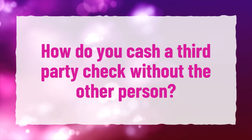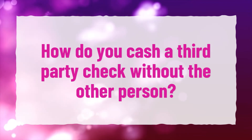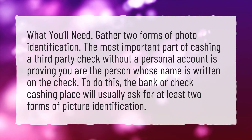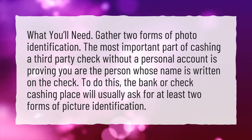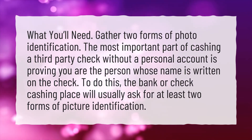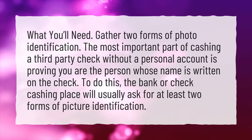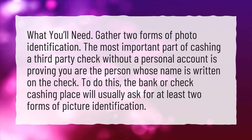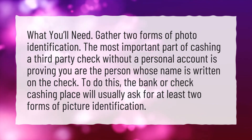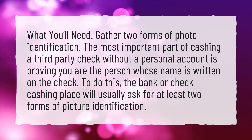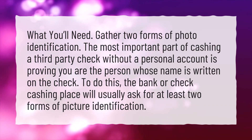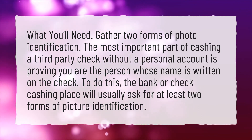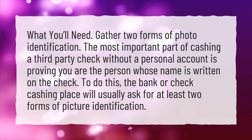How do you cash a third-party check without the other person? Gather two forms of photo identification. The most important part of cashing a third-party check without a personal account is proving you are the person whose name is written on the check. To do this, the bank or check cashing place will usually ask for at least two forms of picture identification.